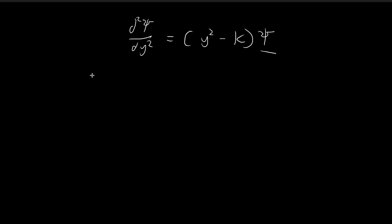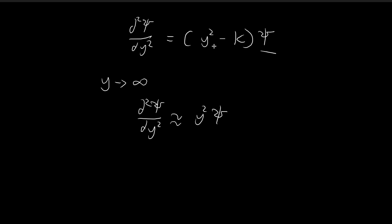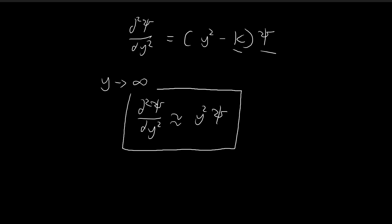In our first step of our guesswork, we're going to observe that as y tends towards large numbers, this differential equation is going to be approximated by this expression over here. This is the case because as y tends towards larger numbers, this term is going to be insignificant — it's just a constant — so this y-squared term is going to completely dominate. That is why this approximation is true.